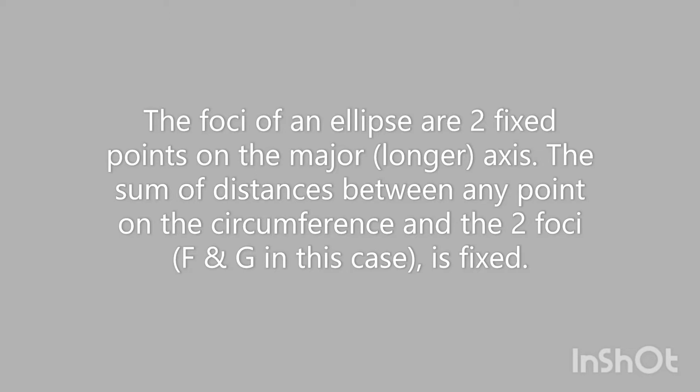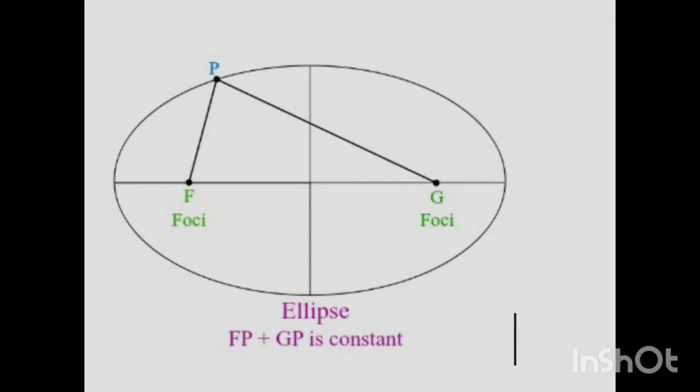Basically the major axis and the minor axis. Now there's a rule of thumb: any two foci, well the two foci and any point on the circumference, the sum of those distances from foci to point back to foci, the sum of those distances is the same regardless of where the point is. So for example we have foci F and G.